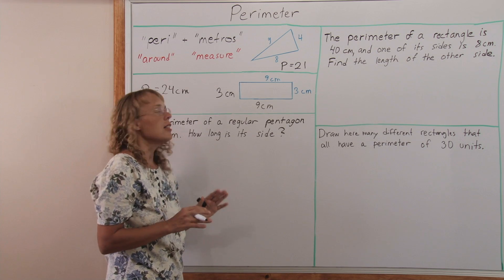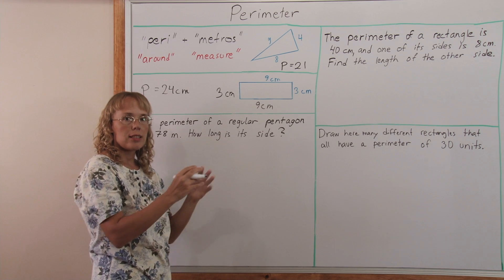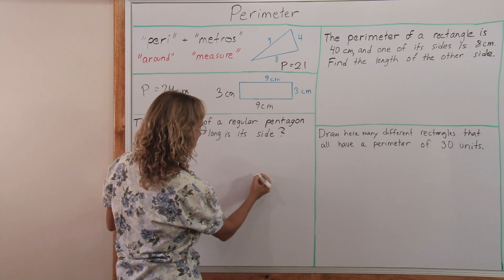Pentagon is a five-sided figure and a regular one means that all of its sides are the same length. So I'll try to draw one now or sketch one now.